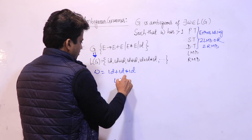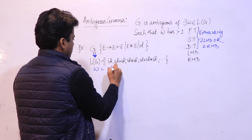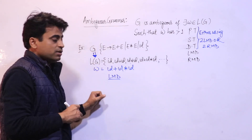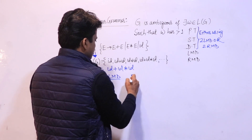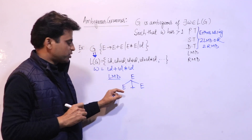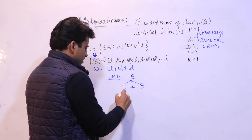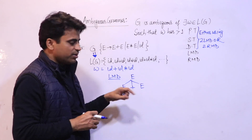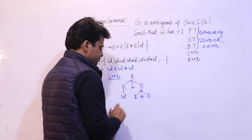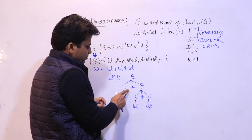Let w = id plus id into id. Applying LMD process — start symbol is E. E gives E plus E. In leftmost derivation, the leftmost E is expanded first. Replace the left E with id. Now the remaining variable E is expanded as E into E. Then replace each E with id. The result is: id plus id into id.